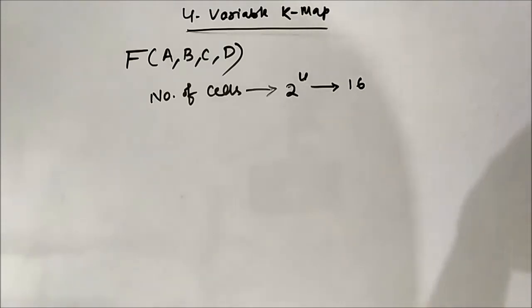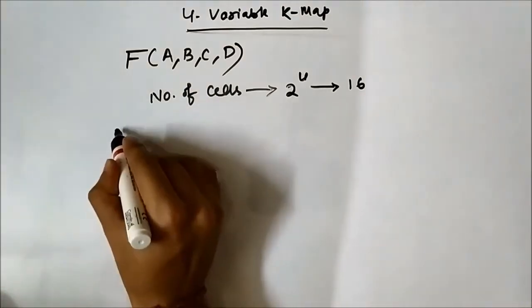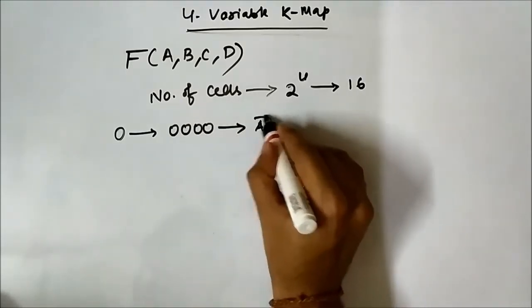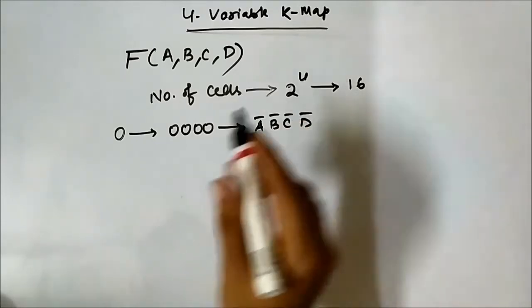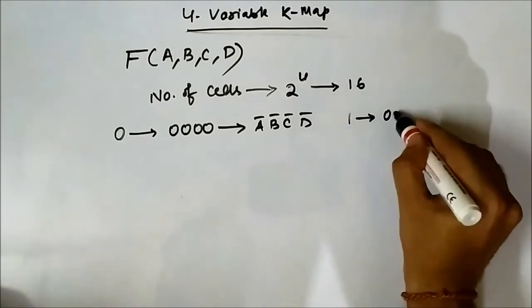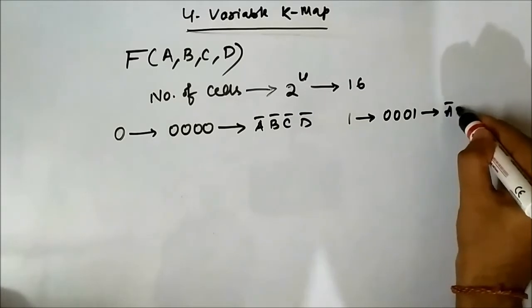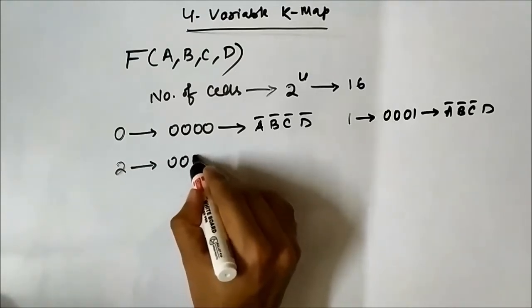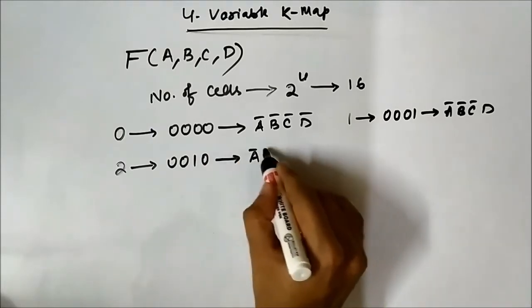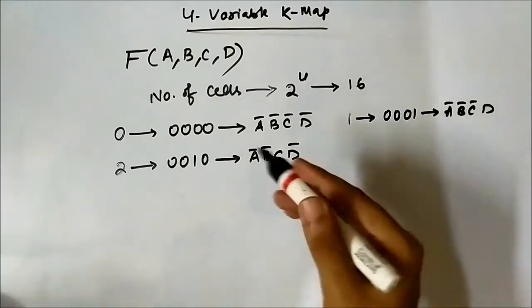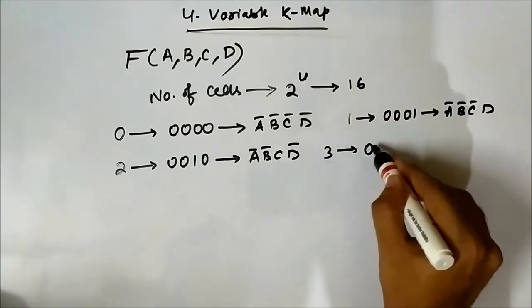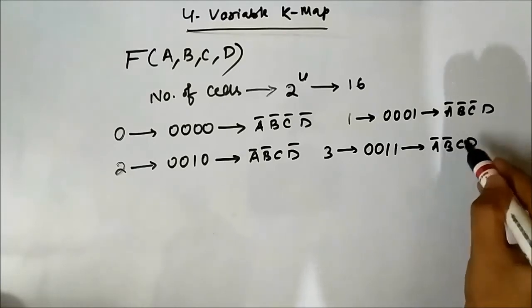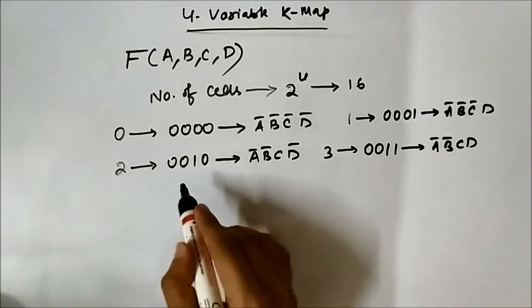The maximum number of terms that can be formed is 16. Starting serially from 0: minterm 0 is 0,0,0,0 which gives A bar, B bar, C bar, D bar. Minterm 1 is 0,0,0,1 giving A bar, B bar, C bar, D. Minterm 2 is 0,0,1,0 giving A bar, B bar, C, D bar. Minterm 3 is 0,0,1,1 giving A bar, B bar, C, D. And likewise it continues from 0 to 15.